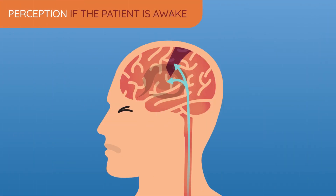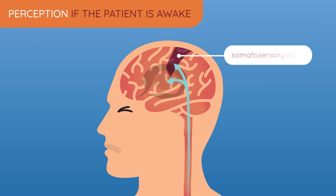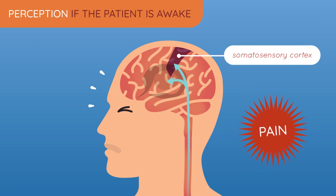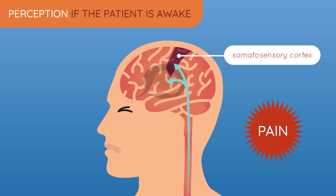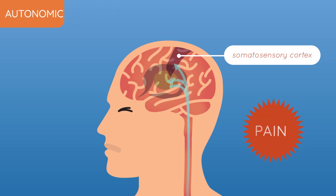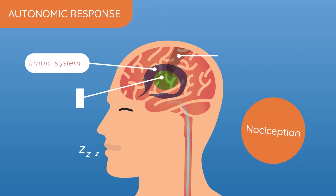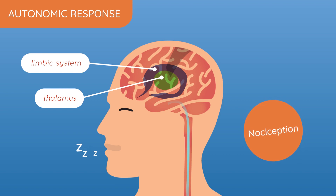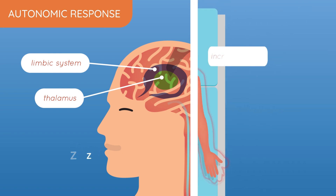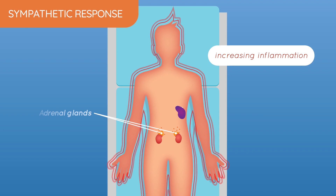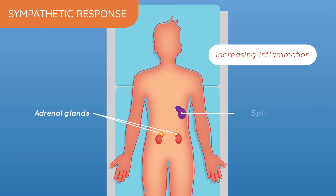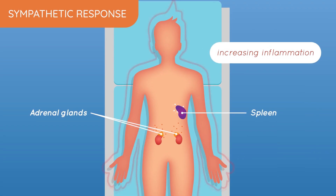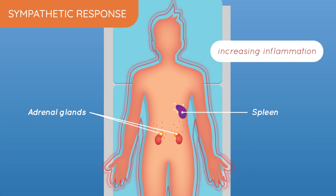When the signal reaches the cortex, perception occurs and pain is then perceived. In the meantime, sympathetic activation starts in the thalamus, activating the immune system and increasing inflammation. This response is what needs to be controlled before surgical stress negatively impacts the patient.